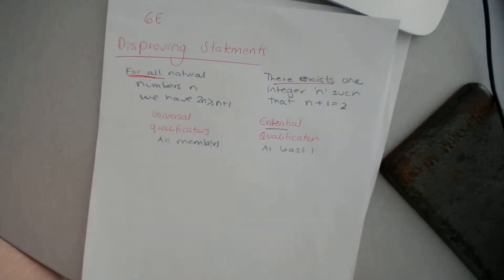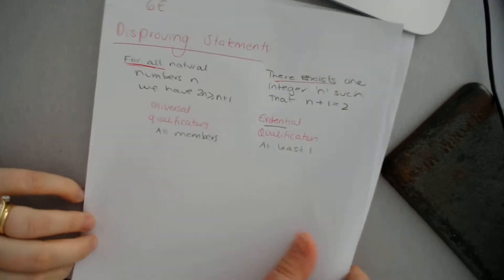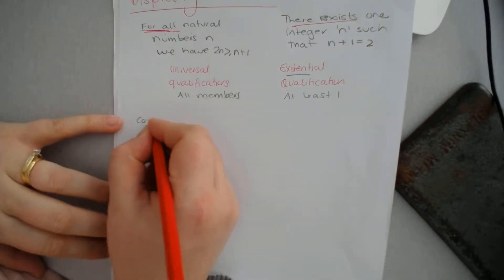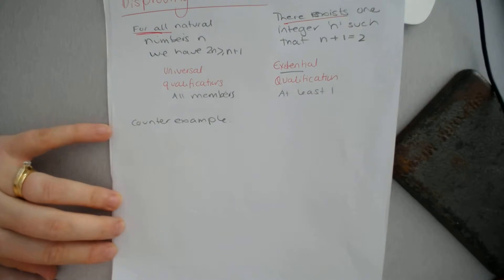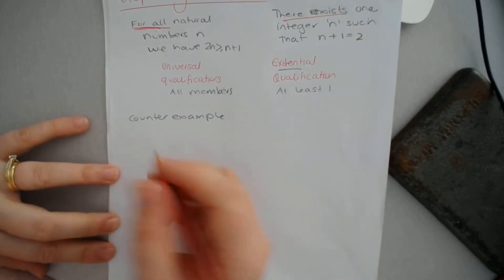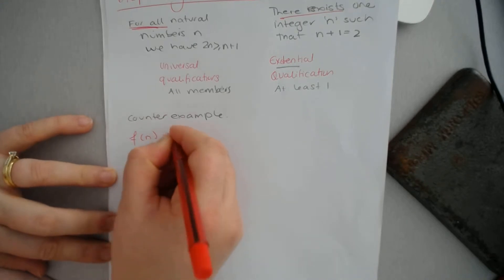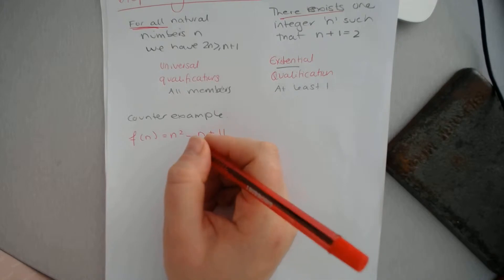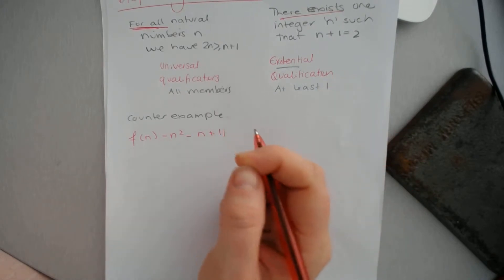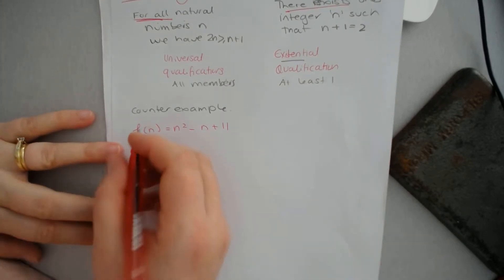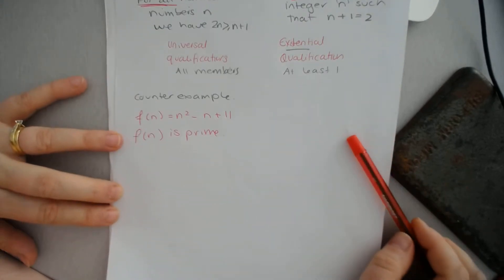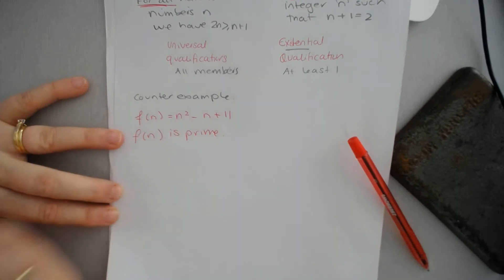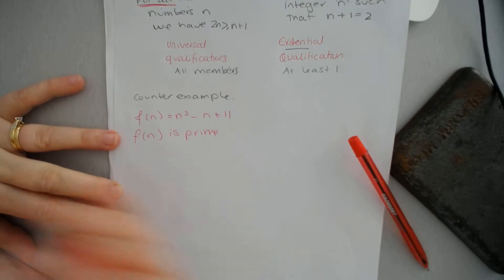If we want to look at one example, we're going to call it proof by counterexample. The one that most textbooks use is you have some function f(n) which equals n squared minus n plus 11. And we might say f(n) is a prime number for all natural numbers. So how I disprove this would be to find one number n for which f(n) is not prime.